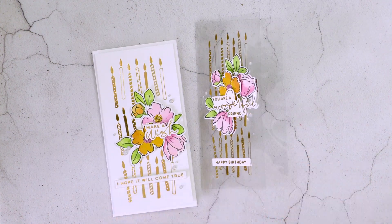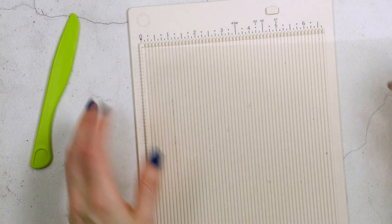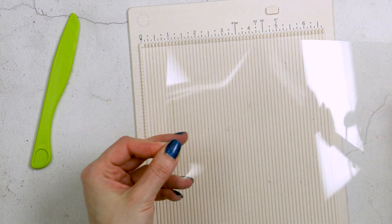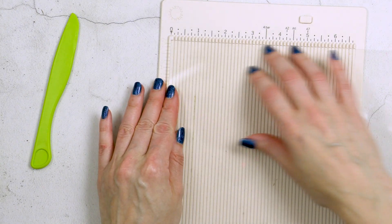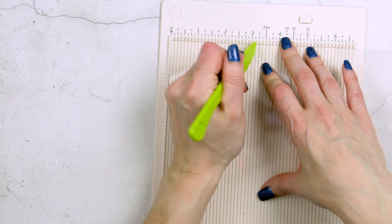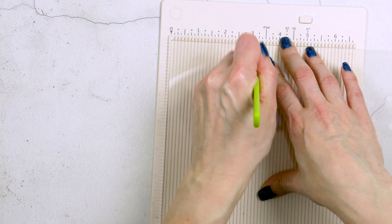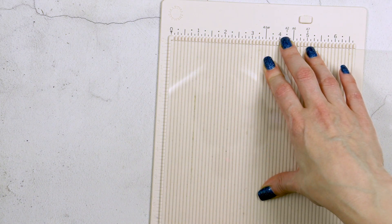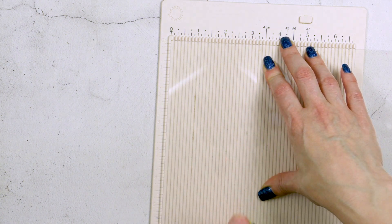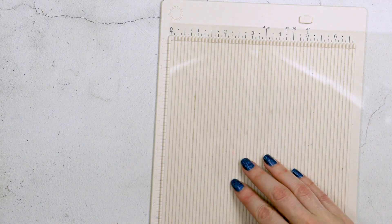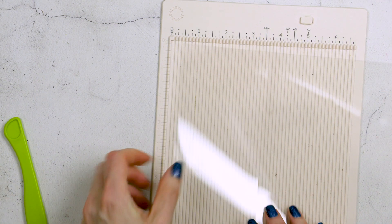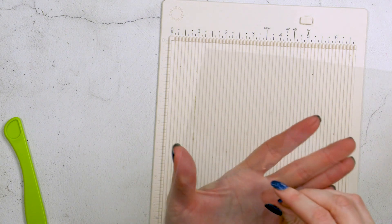We're going to start by foiling on acetate. It is crucial to pick the right kind of acetate, the one that is resistant to heat. If you've ever done heat embossing on acetate, you know that acetate, unlike paper, can warp significantly and can even melt from the heat applied using the heat tool when melting the embossing powder.